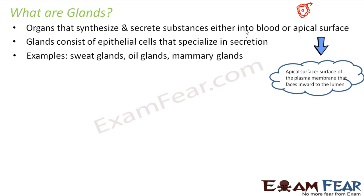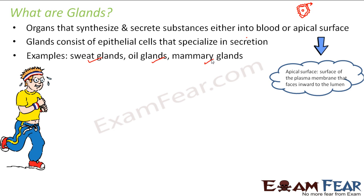Examples of glands include sweat glands, oil glands, and mammary glands. Sweat glands are easy to relate to — when you do vigorous exercise or on a hot sunny day you sweat. That watery fluid on your skin comes from the sweat glands, which produce and secrete sweat.